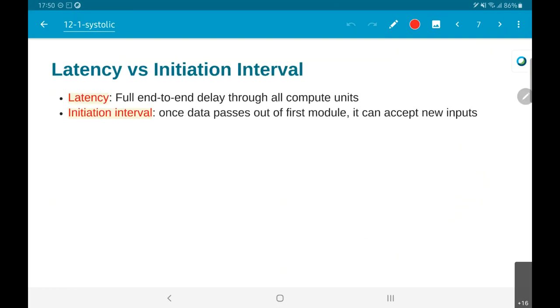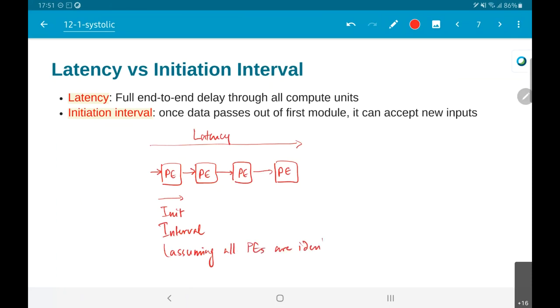Since we are talking about pipelining, it means that the terms that we use in the context of pipelining obviously have relevance here. The latency would be the full end-to-end delay passing through all the compute units, whereas the initiation interval essentially says as soon as one processing element has completed. If I have a structure like this, each of these is a processing element, and then the latency would be the entire delay from here to here, whereas this would be the initiation interval.